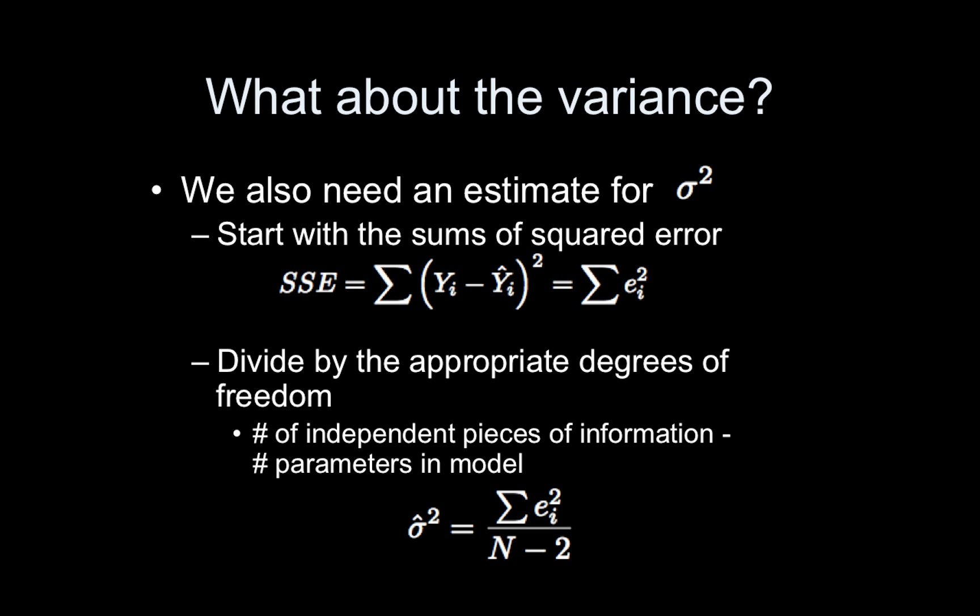So again, don't forget the variance parameter. So far we have our betas. The calculus work I showed you earlier yielded the betas, but we still need our variance, sigma squared. So this is the residual error. And to estimate that, we go back to this thing that we actually minimized, the sums of squared error, which is the sum of yi minus yi hat squared. And we take that and we divide by the appropriate degrees of freedom.